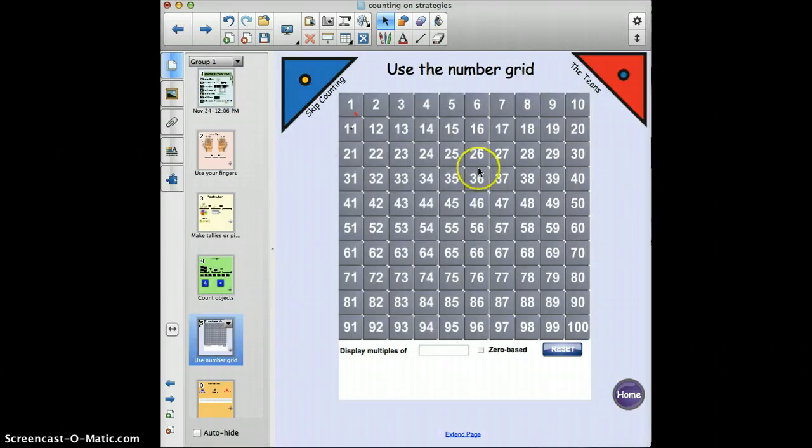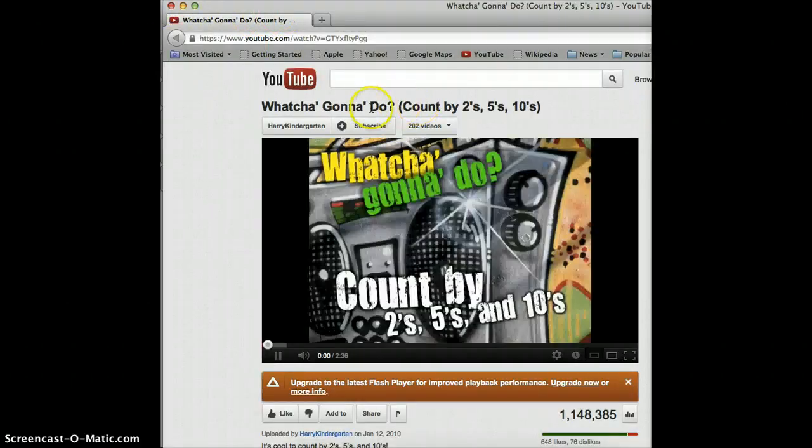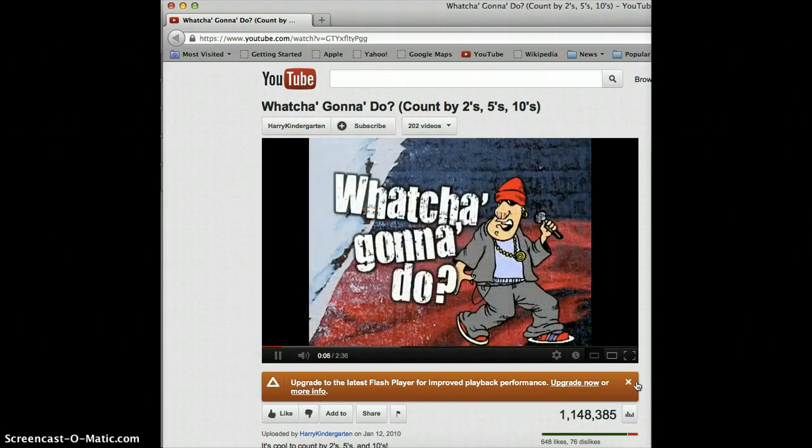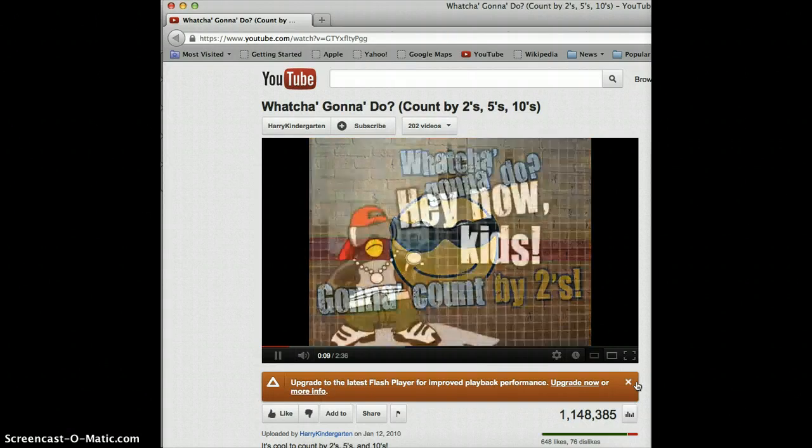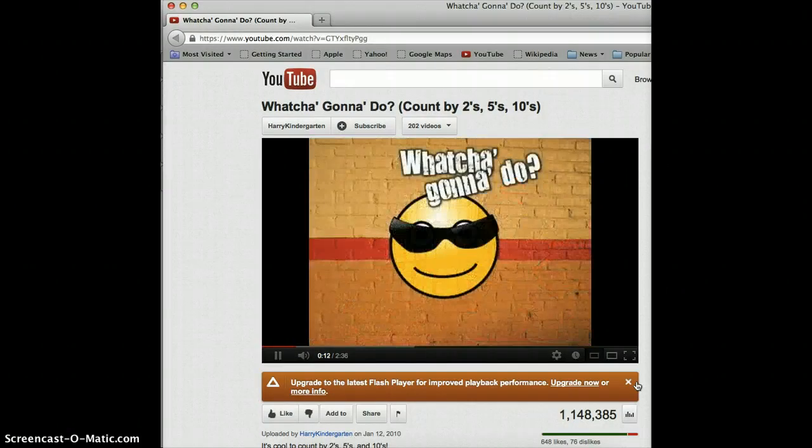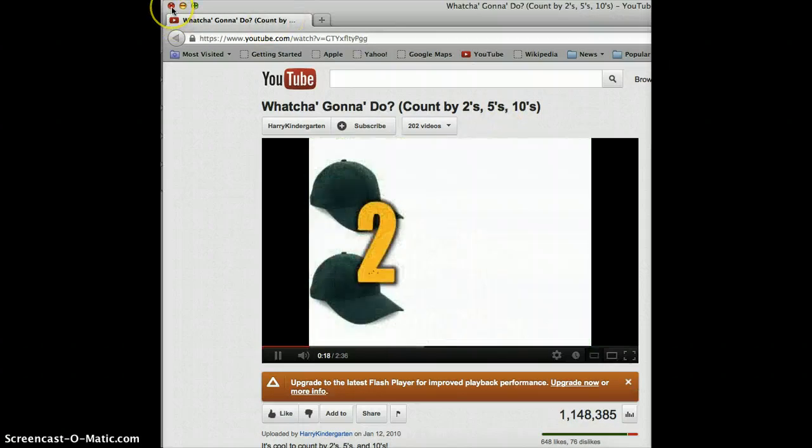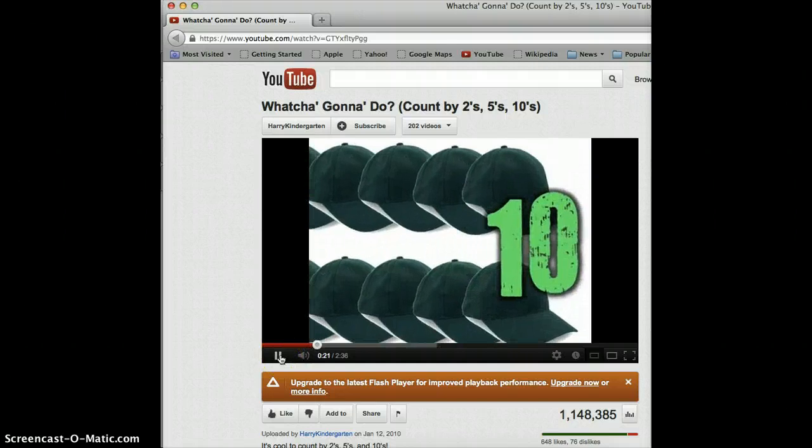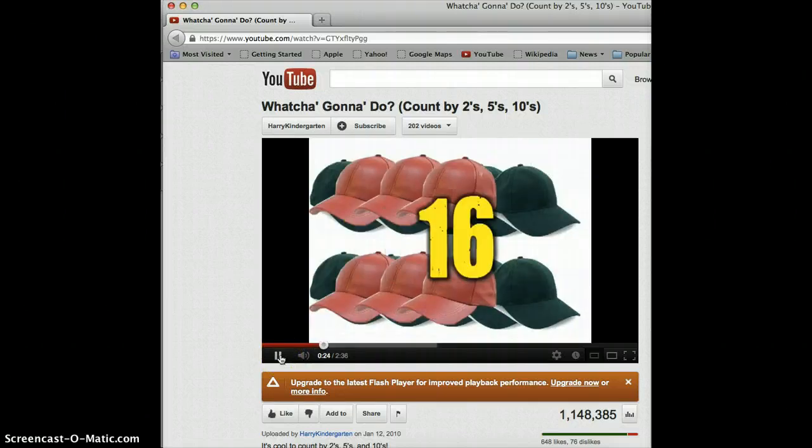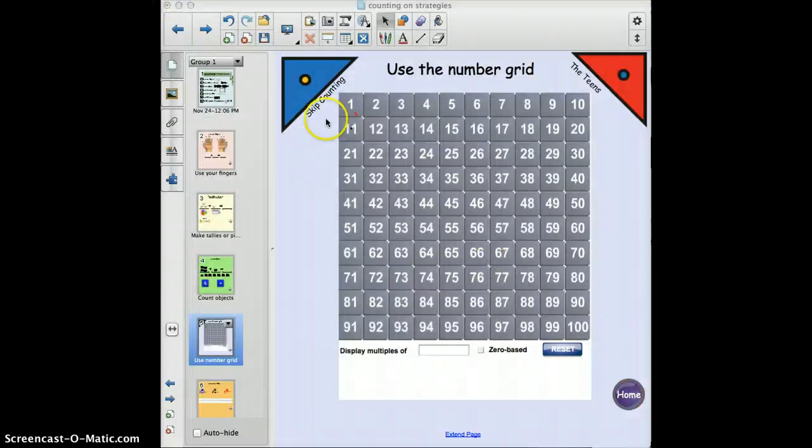Next is use the number grid. Here I have a number grid. These are both songs you can go to - they're by Harry Kindergarten. This is Skip Counting and this is In the Teens, and they're hyperlinked to go to that. Here's one of them - Hey now kids, whatcha gonna do, gonna count by twos. Let's see where do we start, two, four, six, eight, ten, twelve, fourteen, sixteen. So you can see you get the point there, and there's another video on this one.